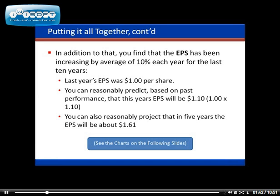In addition, you found the earnings per share by looking at the income statement for the last five to ten years, and found that EPS has been increasing by an average of 10% each year for the last ten years. Last year's earnings per share was $1.00 per share. Since you know the average annual increase, you can reasonably predict that the earnings per share will be $1.10 next year — calculated by multiplying last year's EPS of $1.00 by 1.1.